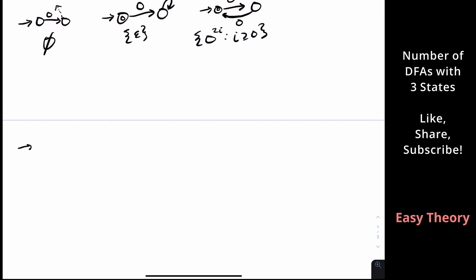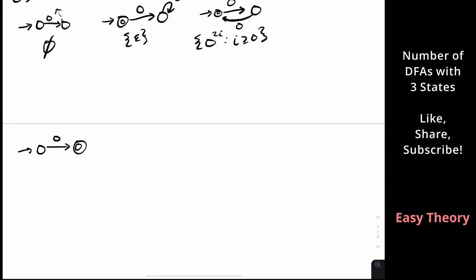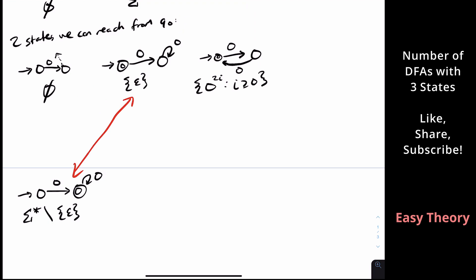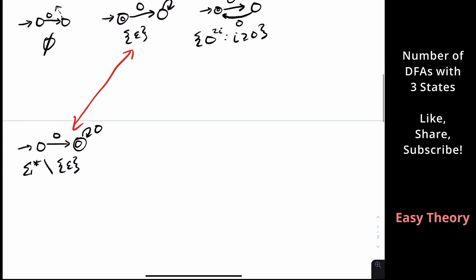Now consider the case where the start state is not final but must go to a second state that is final. Then we could have a self-loop on the second state, which means we accept all strings of length at least one — sigma star minus the empty string. There's a connection here: regular languages are closed under complement, so if we flip final and non-final states we get a DFA for the complement of the language.